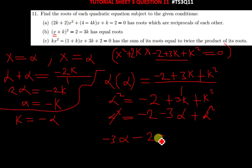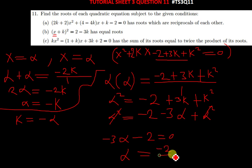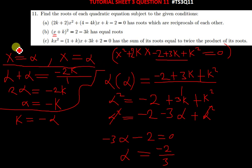We're left with negative 3 alpha minus 2 equals 0, so alpha equals negative 2 over 3. This is our root — the value of alpha. Since we assumed x equals alpha from the start, this value is exactly the root we were asked to find.